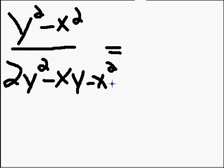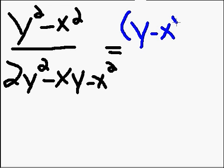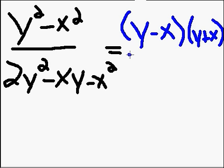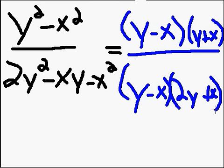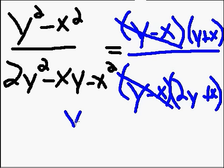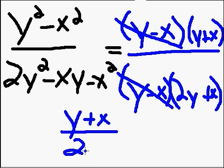Now factoring isn't required, but you should be able to recognize that y squared minus x squared is the difference of squares, and it factors to (y minus x)(y plus x). The bottom is a trinomial, which will factor to (y minus x)(2y plus x). See that there's a y minus x on top and a y minus x on the bottom, so they cancel out. And our final answer will be (y plus x) over (2y plus x).